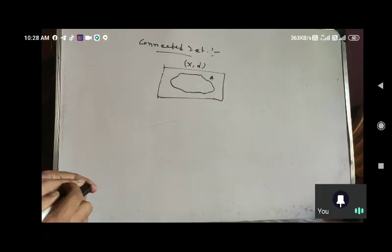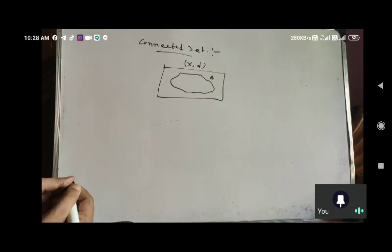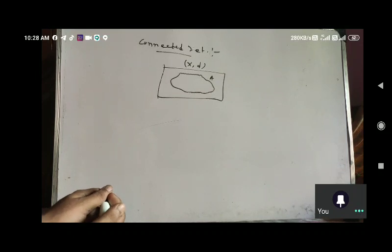A is a subset. This is a metric space where A is a subset of X,τ.